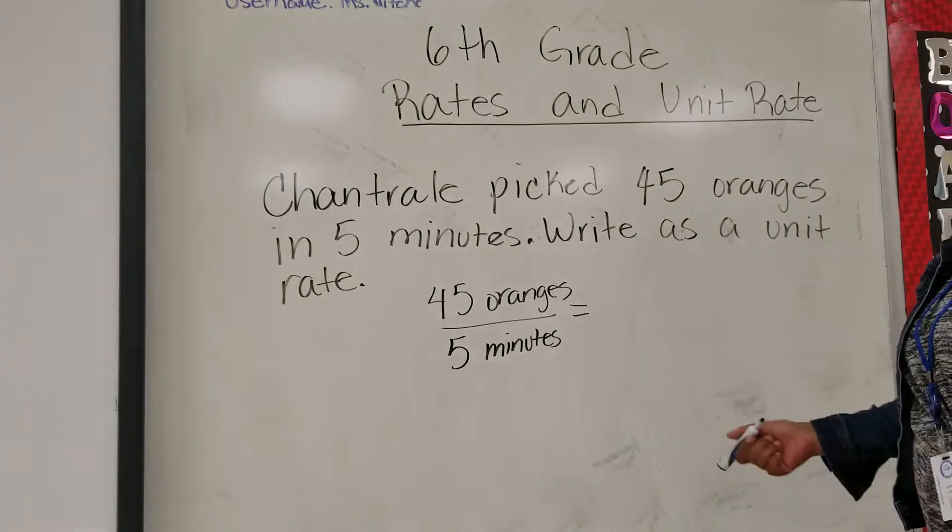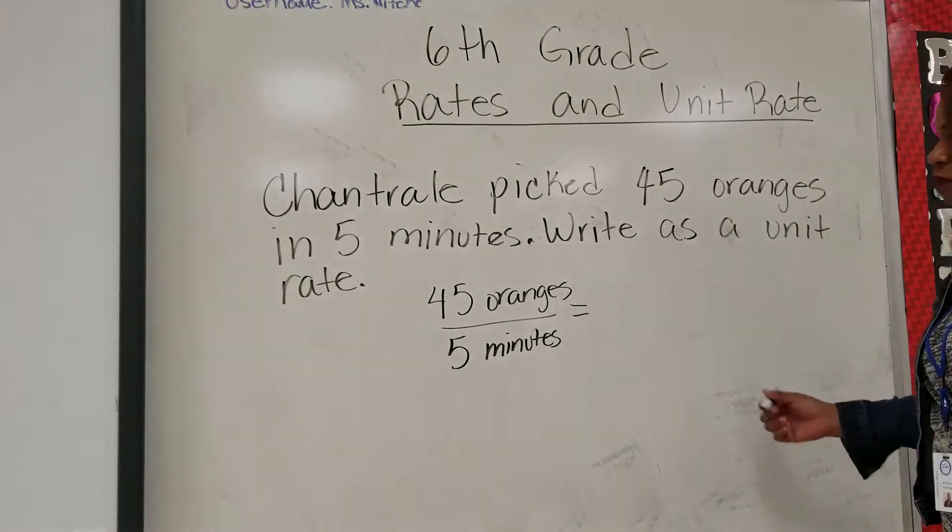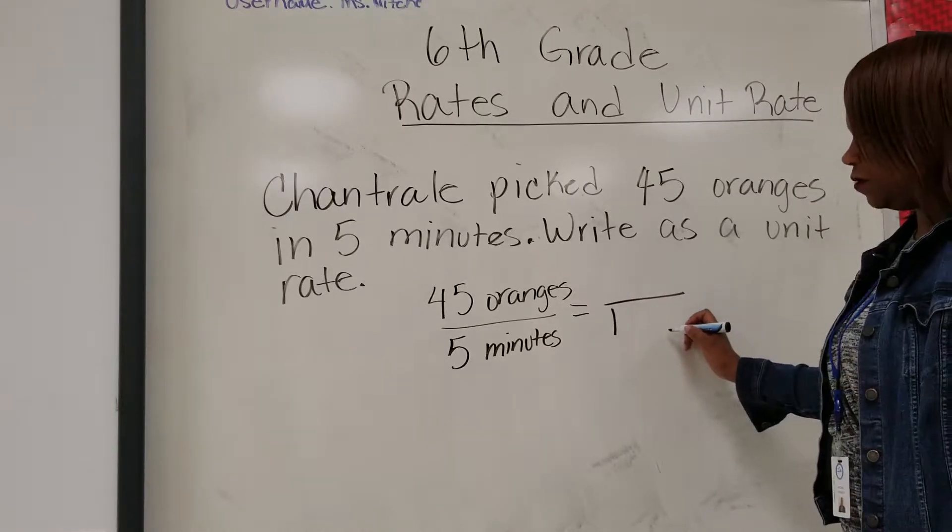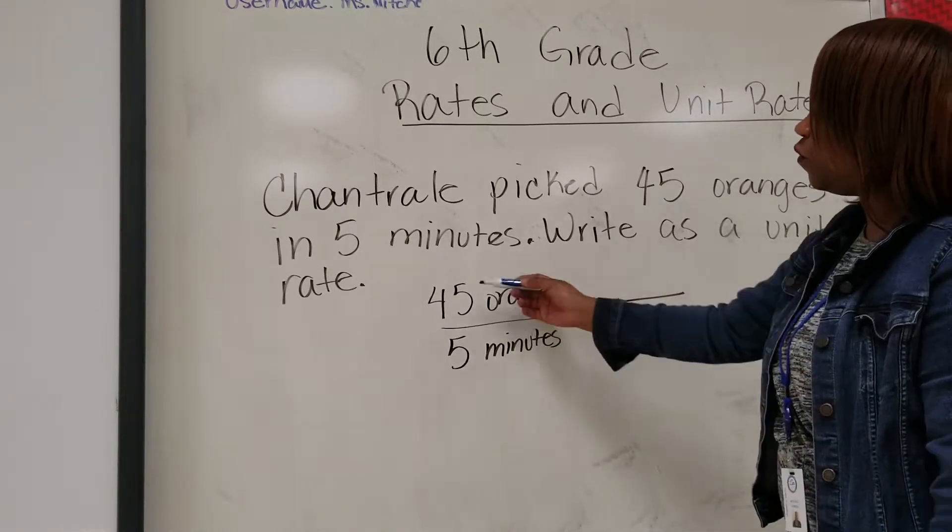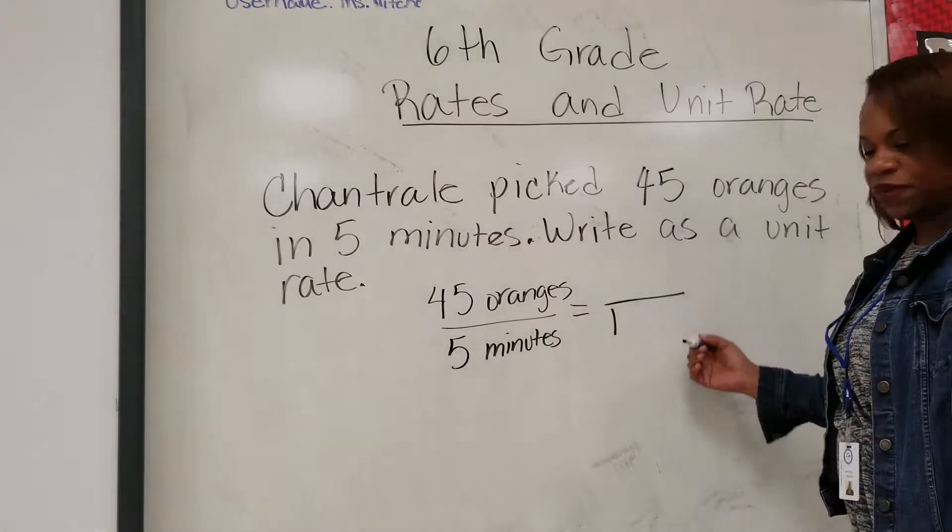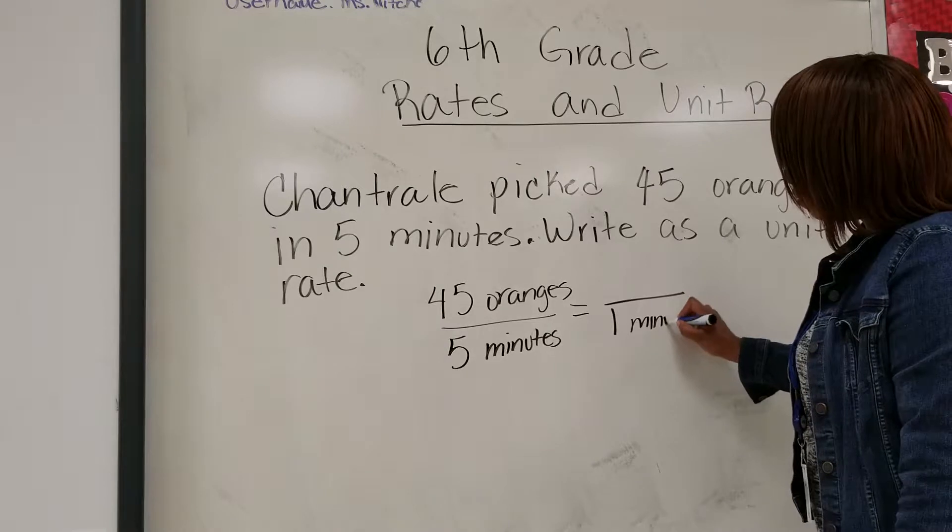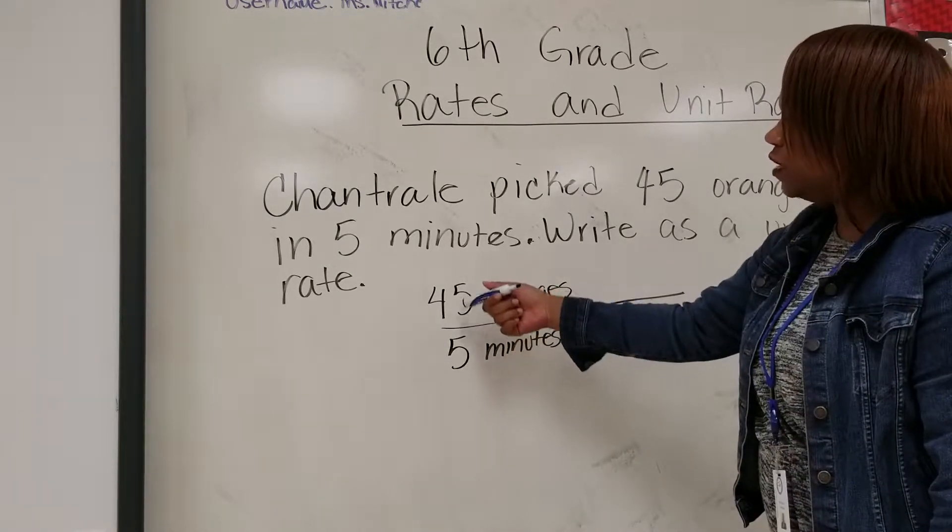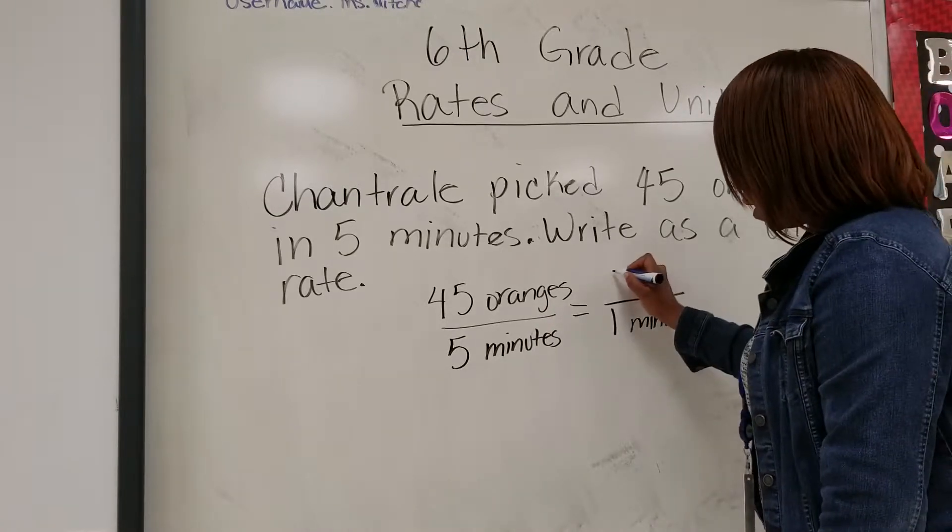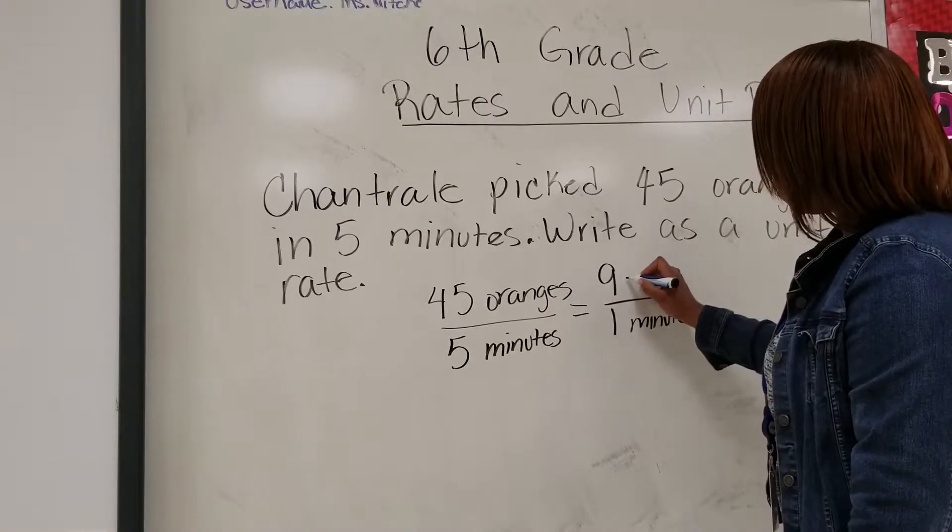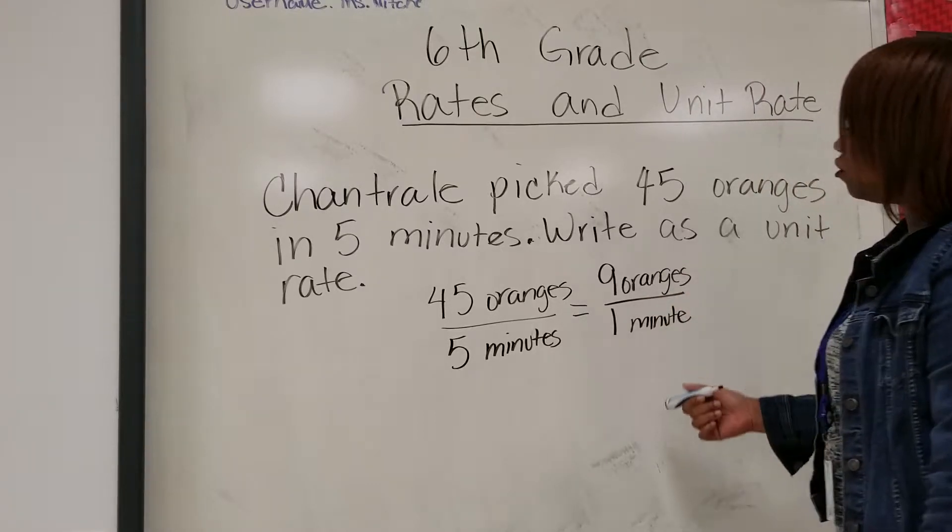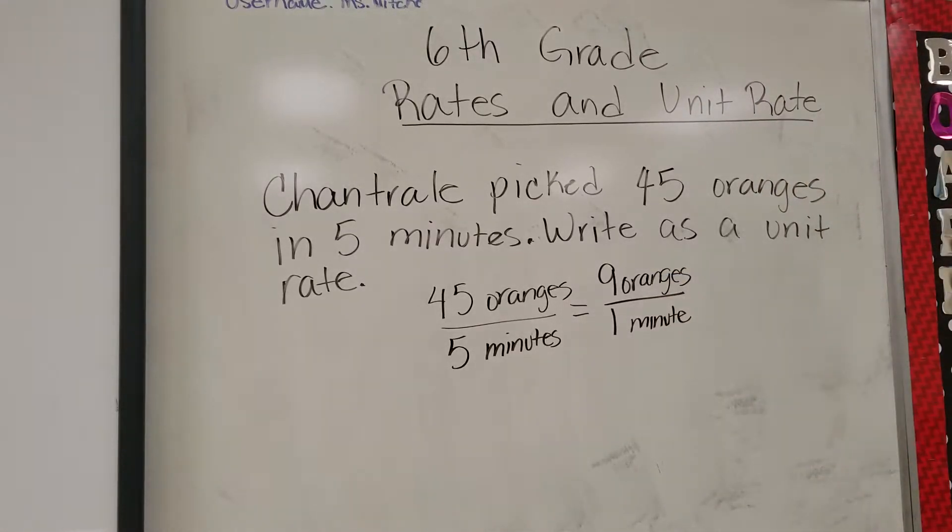Now we need to write as a unit rate. So therefore, by definition, one should be our denominator. So if she picked 45 oranges in five minutes, how many did she pick in one minute? So again, we divide 45 into 5 and we get 9. Therefore, she picked nine oranges in one minute.